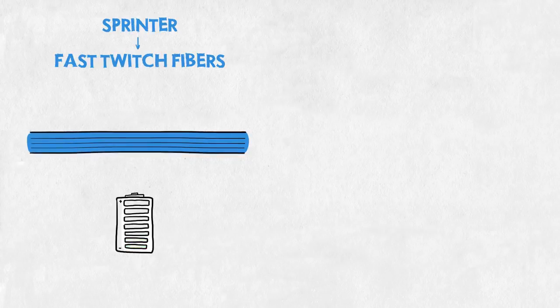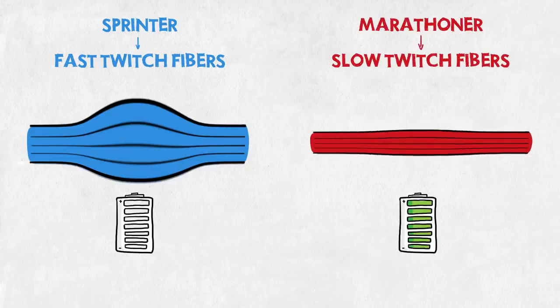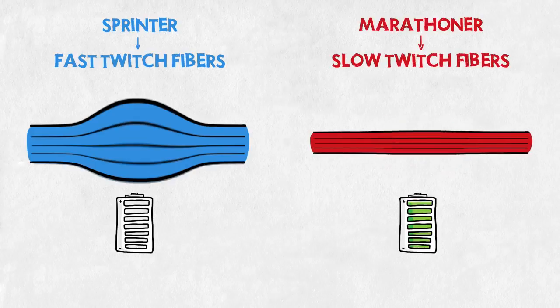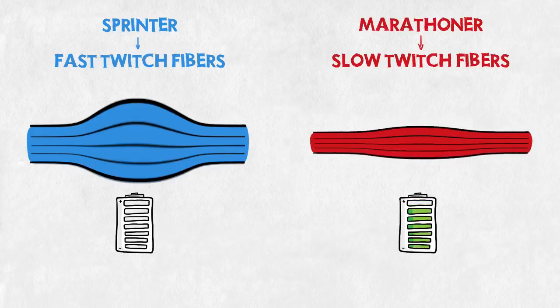When trained, fast twitch fibers naturally become big and heavy. On the other hand, a marathoner uses mostly his slow twitch fibers, not as reactive and speedy as their fast twitch brothers, but they can work nonstop for hours.